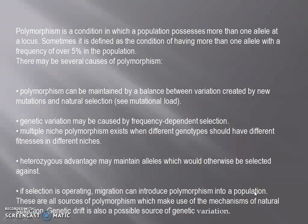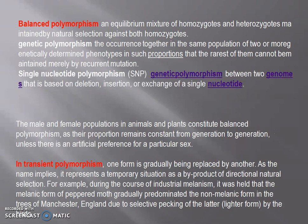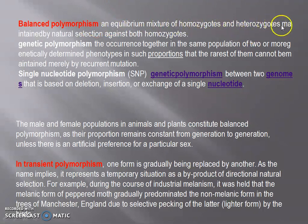Genetic polymorphism may be modified into two groups: balanced genetic polymorphism and transient polymorphism. In balanced genetic polymorphism, two or more morphs of the genotype coexist in the same population of a species in a stable environment. It is an equilibrium mixture of homozygotes and heterozygotes maintained by natural selection against both homozygotes.